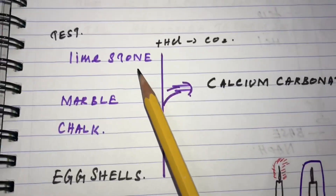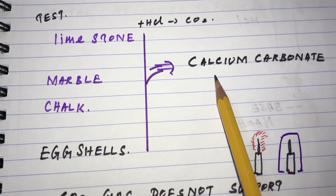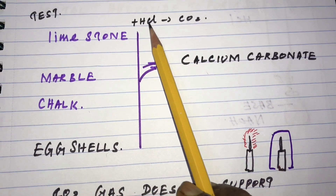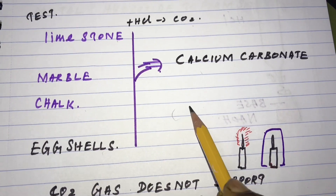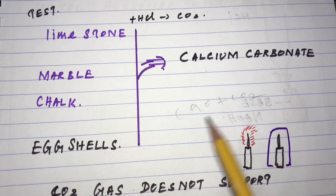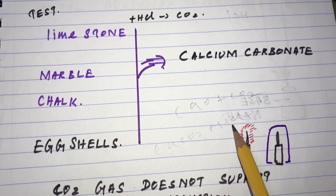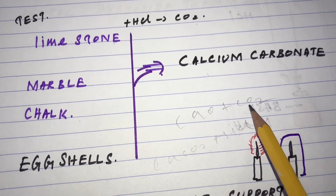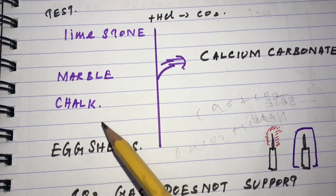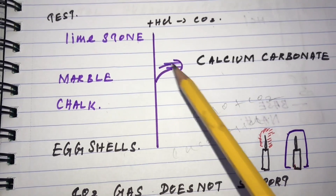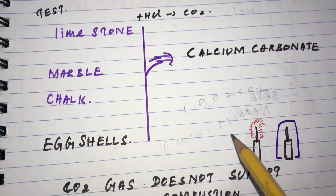Naturally, limestone, marble, chalk, and eggshells all contain calcium carbonate. To test this, when we add hydrochloric acid to these substances, it releases carbon dioxide and forms calcium chloride. So calcium carbonate plus HCl releases carbon dioxide and forms the corresponding salt. These substances — limestone, marble, chalk, and eggshells — all contain calcium carbonate, and when acid is added, carbon dioxide is released.